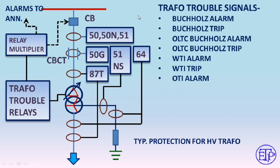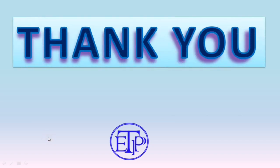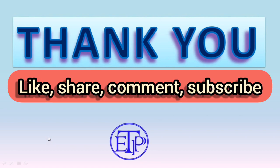All transformer trouble signals generate normally-open (NO) type contacts. When the relay operates, the NO contact converts to NC. Inside the switchgear, contact multipliers using electromagnetic relays expand these contacts. Trip signals are then sent to the circuit breaker, and alarm signals are sent to the annunciator switchboard. This is how transformer protections are taken care of. I hope you have enjoyed this video and learned about transformer protection and how the single-line diagram is made.